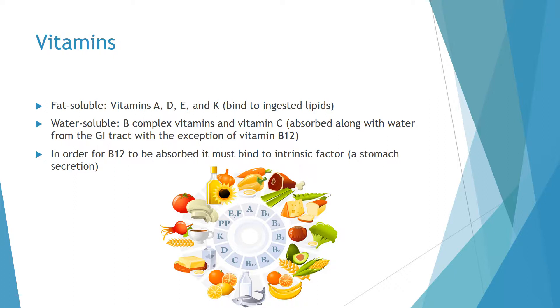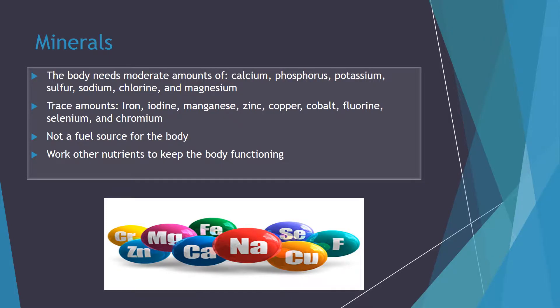In order for B12 to be absorbed, it must first bind to intrinsic factor, which is a stomach secretion. The body requires moderate amounts of seven minerals: calcium, phosphorus, potassium, sulfur, sodium, chlorine, and magnesium. It also requires trace amounts of iron, iodine, manganese, zinc, cobalt, fluorine, selenium, and chromium. Minerals are not used for fuel but work with other nutrients to ensure a smoothly functioning body. For example, calcium, phosphorus, and magnesium salts harden the teeth and strengthen the skeleton.